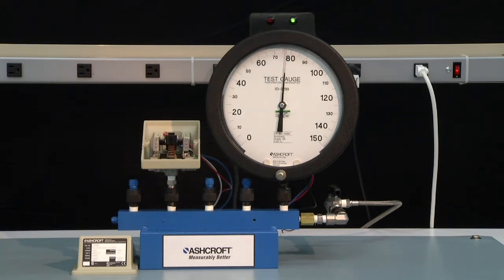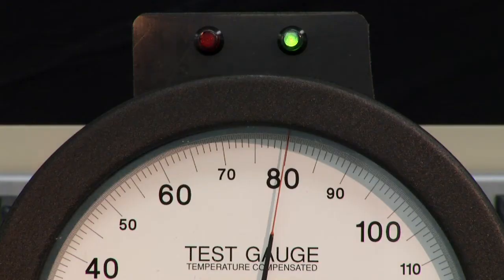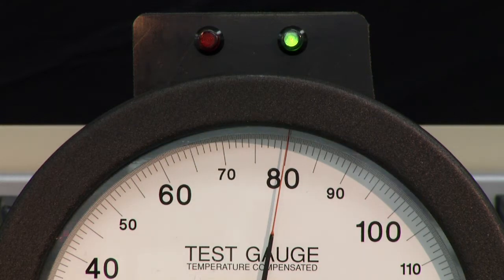You'll note that the switch did turn on ahead of the set point, but that is okay. We are going to adjust it so it will turn off and then turn back on again at the set point. To do that, we set the pressure to the desired set point, 80 PSI.